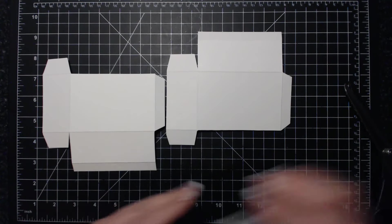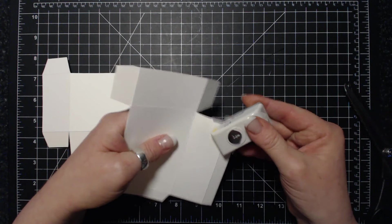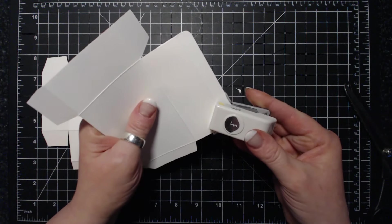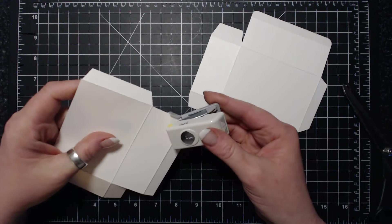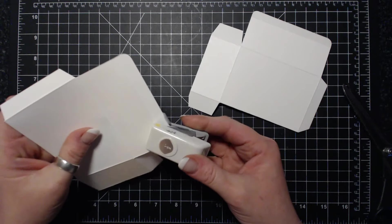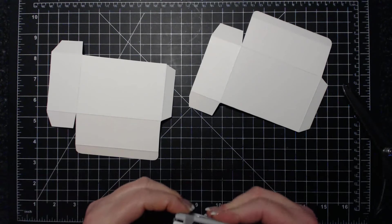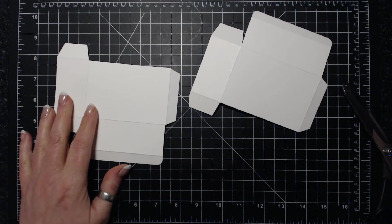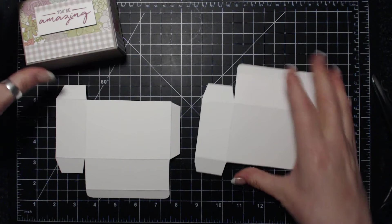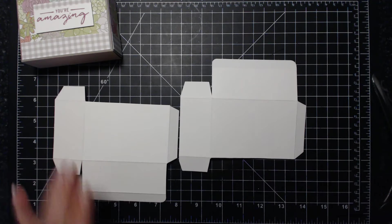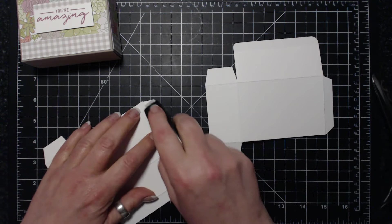I'm going to take my corner rounder now. Stampin' Up does sell one, it's called the Project Life corner rounder, which is really handy to have a corner rounder around. I have this one, this was EK Success, and I had it for a very long time. So until it breaks, I'm not going to replace it. We're going to do some decorating first. However, I think maybe what I'll do is I'll put the box together first, or at least part of it.